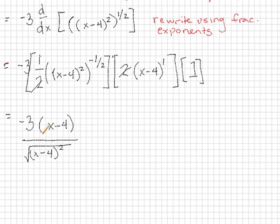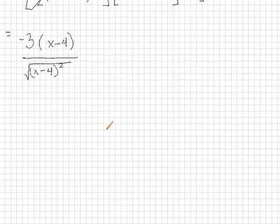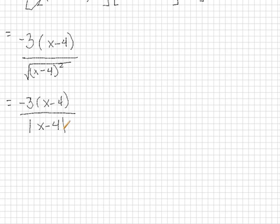And once we've differentiated and simplified, we can go ahead and put everything back in terms of the absolute value. So the numerator is going to stay the same. And the square root of anything squared is the same as saying the absolute value of something. So what we really have on the bottom is the absolute value of x minus 4. And that should be your final answer.